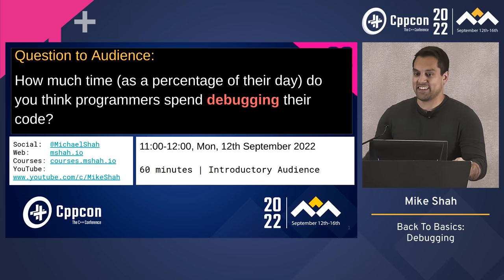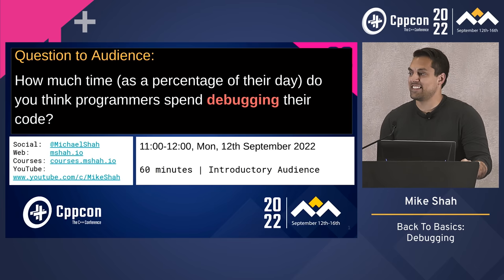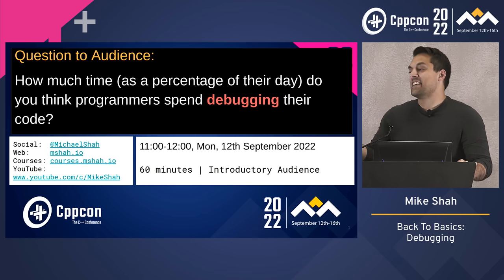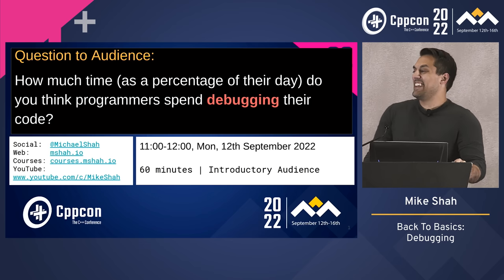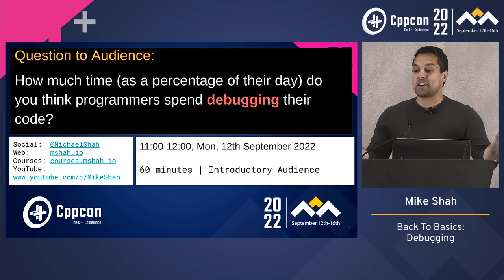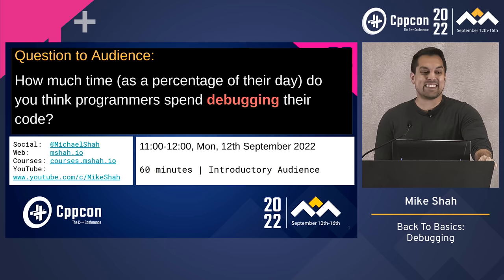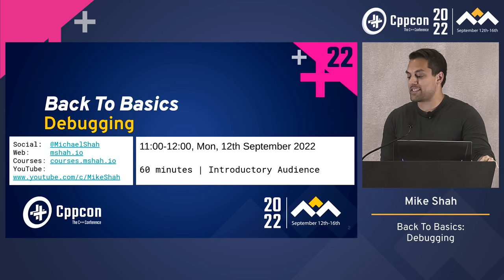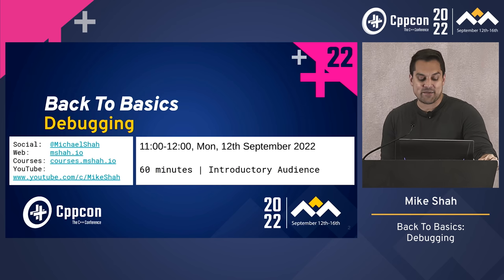Audience responses ranged from 60% to 80% to 100%, with one person noting it depends on the language. Some of us are full-time debuggers on some days. So it varies — context certainly counts. But I want to actually give you an answer to that as we move along.